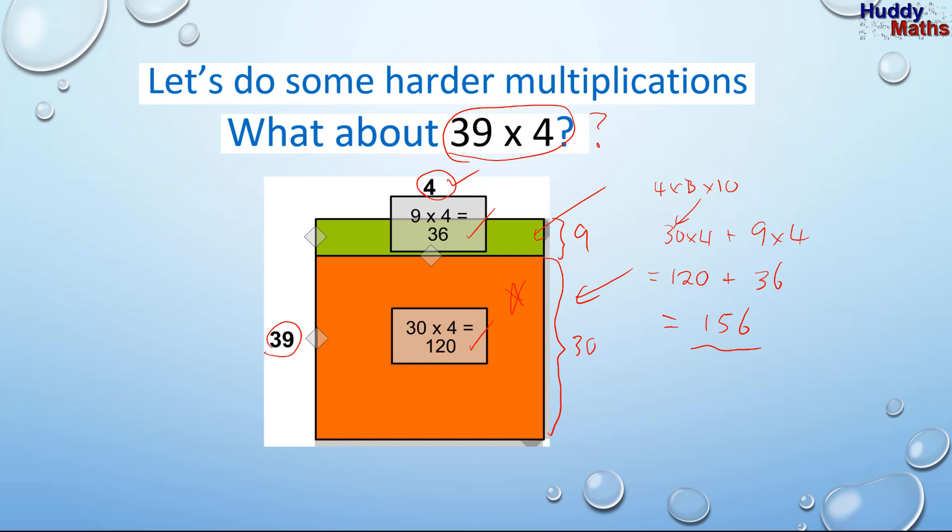Is there another way of doing it? Well, let's do it with our diagram. 39 lots of 4 is 40 lots of 4. Take 1 lot of 4. Okay. So, that's 160. Take 4 is 156. Oh, have I got you thinking now? Are there other ways of breaking these numbers down so that you can do them, work with the multiplication within your head?